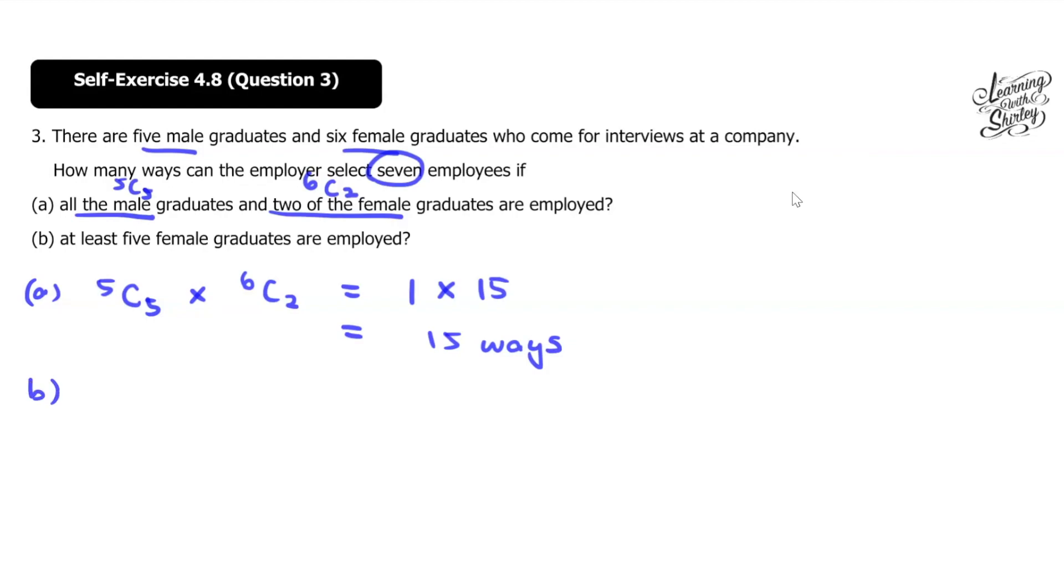That's all for part B. So at least 5 female graduates are employed. It means it's either 5 female or 6 female. So if it's 5 female, that would be 6C5 times with male. So male we have 5 and then C. We need 2 more because total must be 7 employees. So or means plus. So if it's 6 female, it would be 6C6. And then we need 1 more from male. So it would be 5C1.